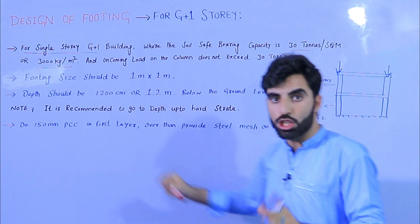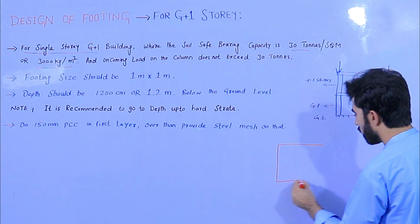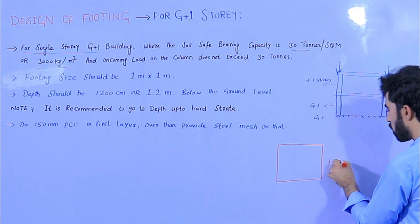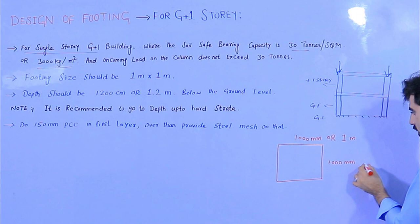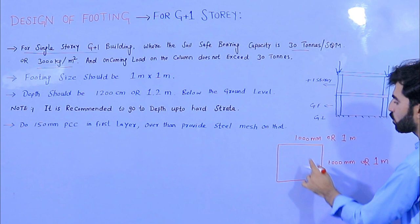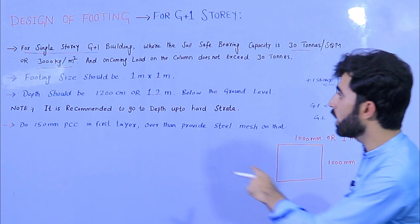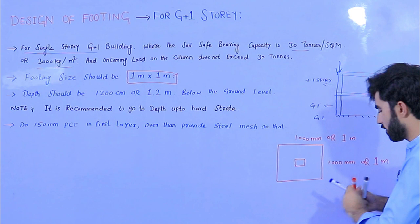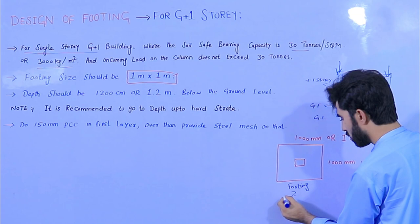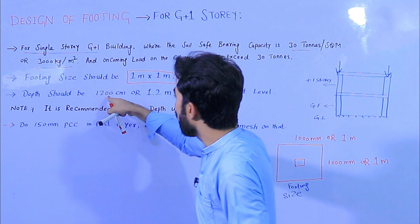Now, what should be the footing size for G plus one story? The size of the footing should not be less than 1000 mm by 1000 mm — that is one meter by one meter. Each side should be one meter. This is the standard data for footing size.